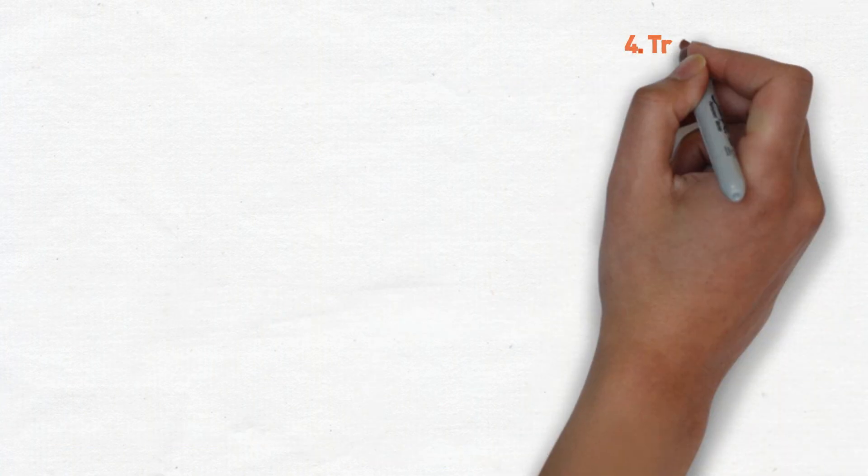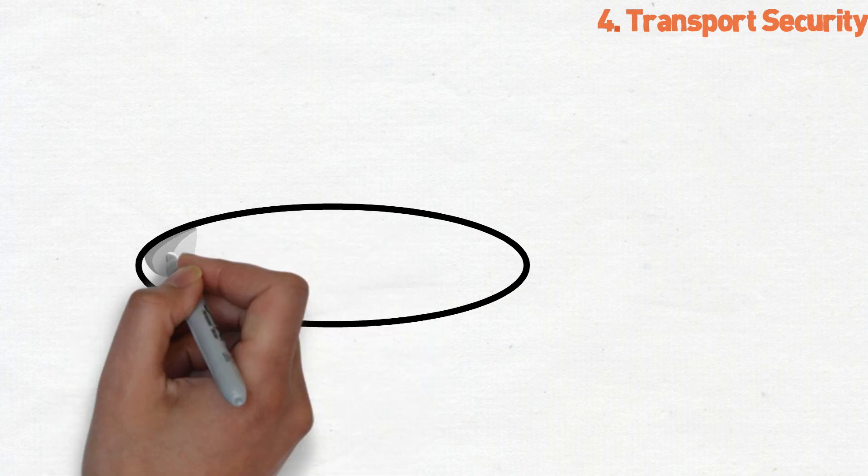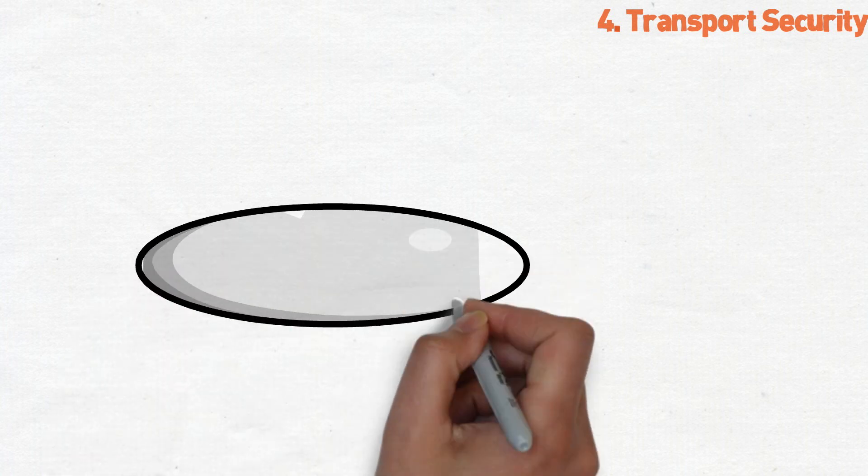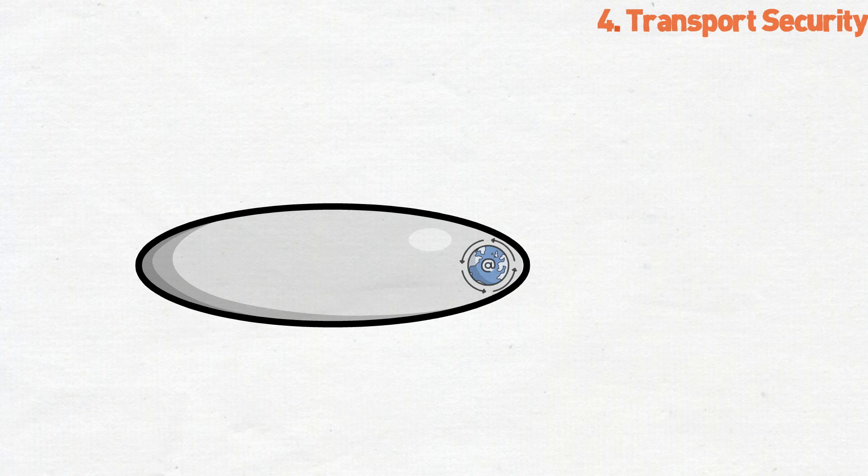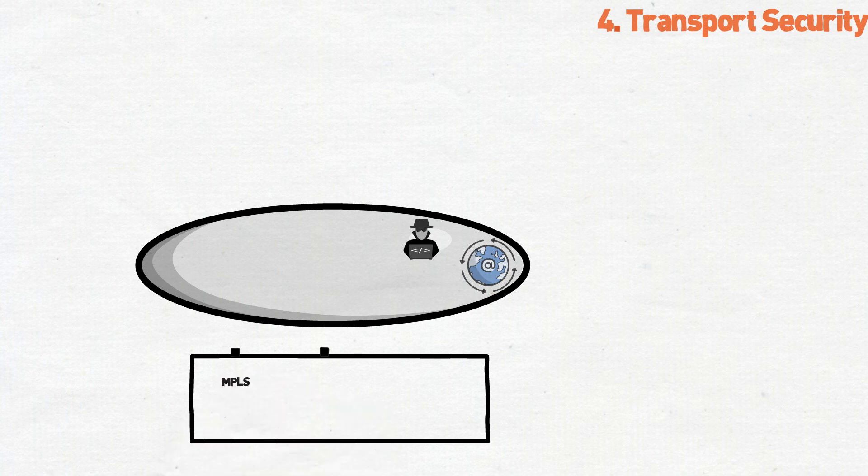Number four, transport security. As companies move away from private circuits and utilize the unsecure public internet to transport data into private resources, strong encryption in your VPN tunnels become critical. This means making sure you have strong VPN encryption settings and have it tunneled back to your data center or cloud services.